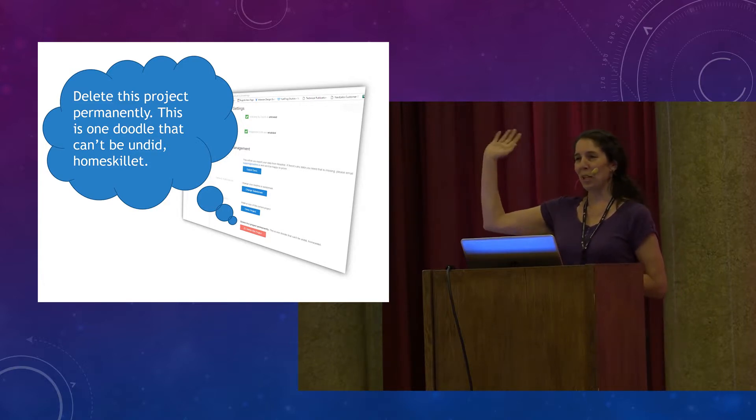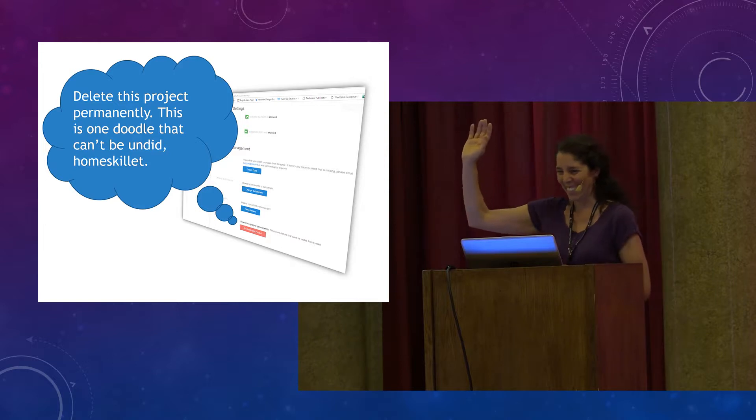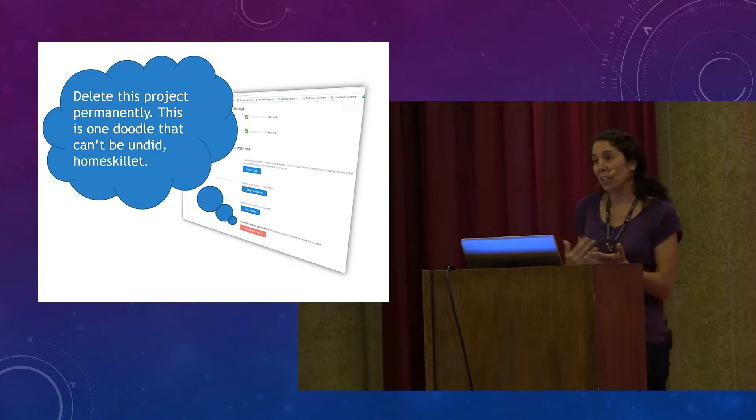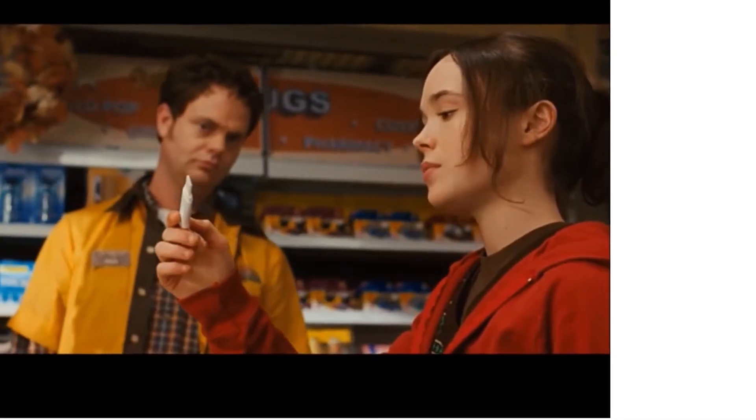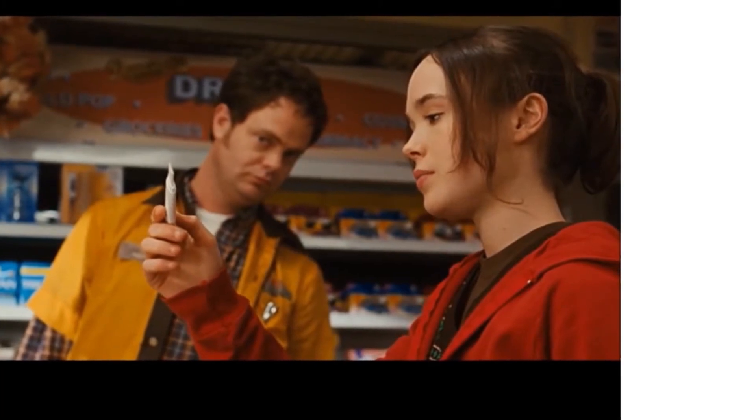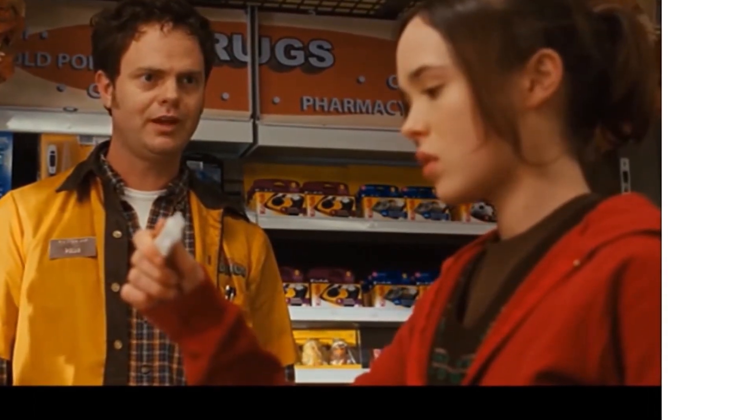By a show of hands, who knows what a home skillet is? Honestly, I had to look it up. Urban Dictionary says it's like a homey or a homeboy or a close friend, homegirl. And I was so impressed with this innovative turn of phrase that I googled it. I was surprised to learn that the line had been used in a movie, the 2007 comedy Juno. Here's a quick clip from the film.